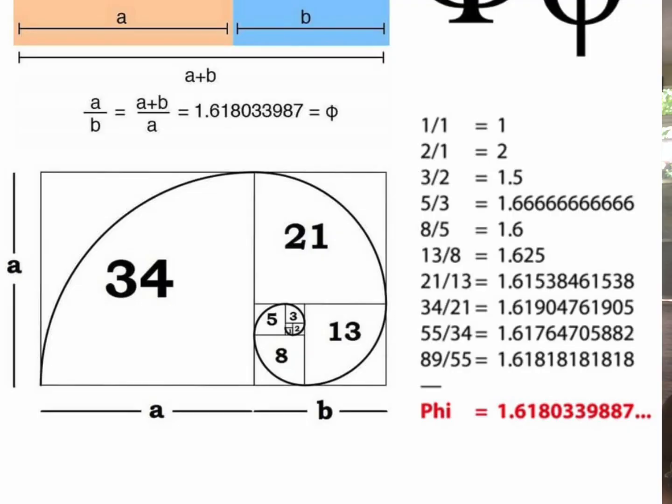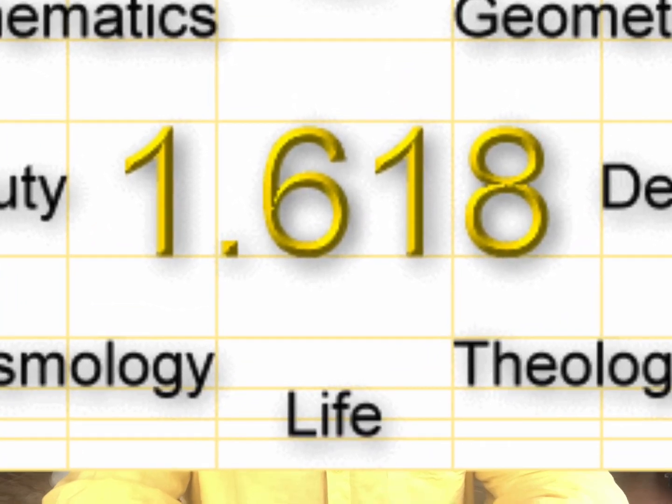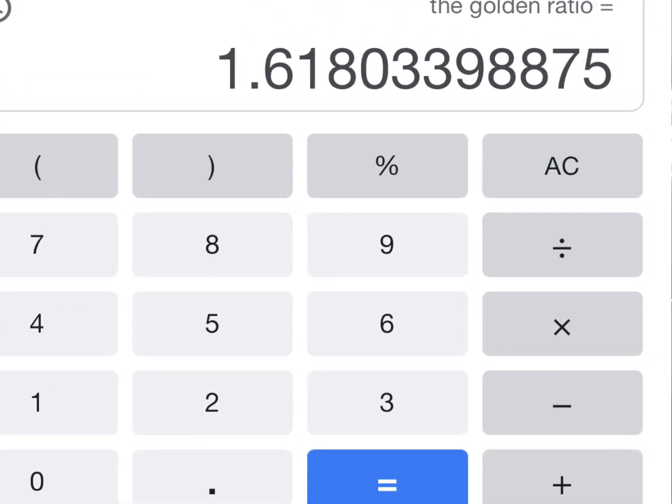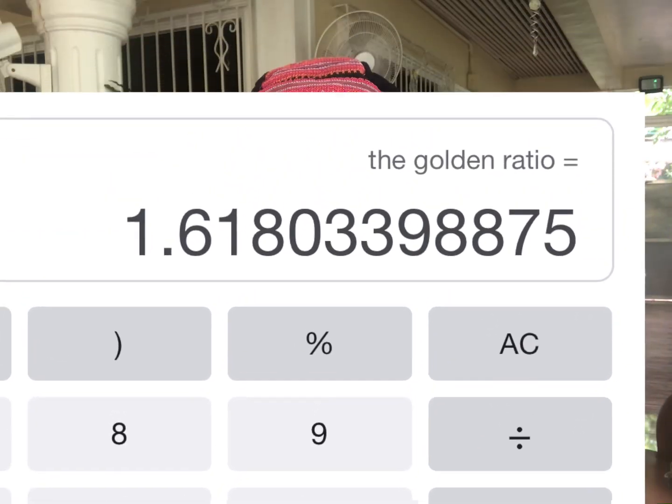Now, if I were to ask a mathematician the same thing, he would probably agree with the scientist, except he would give a mathematical formula to support the symbol of the spiral, and that would be known as the golden ratio.